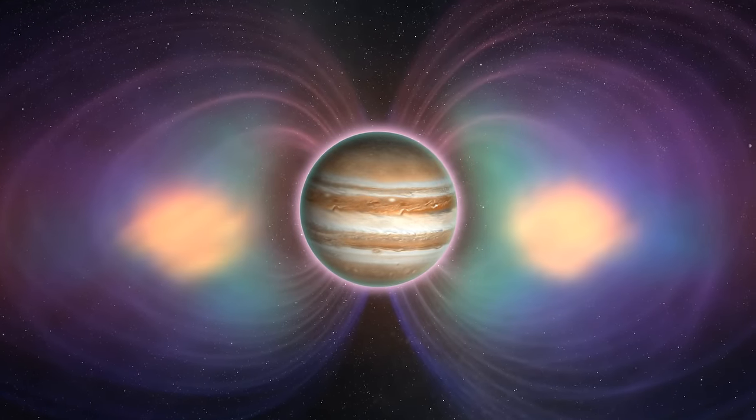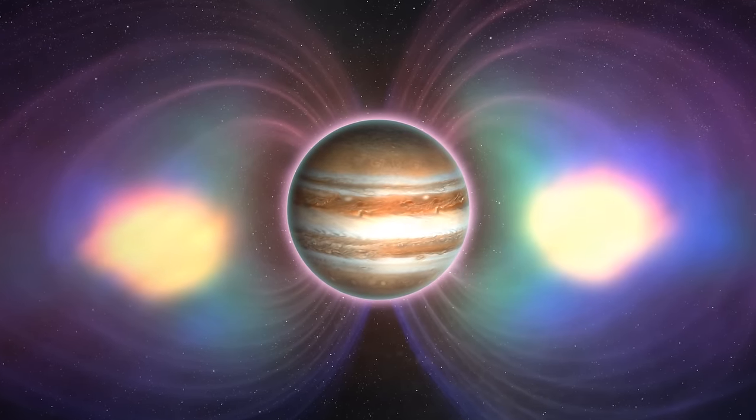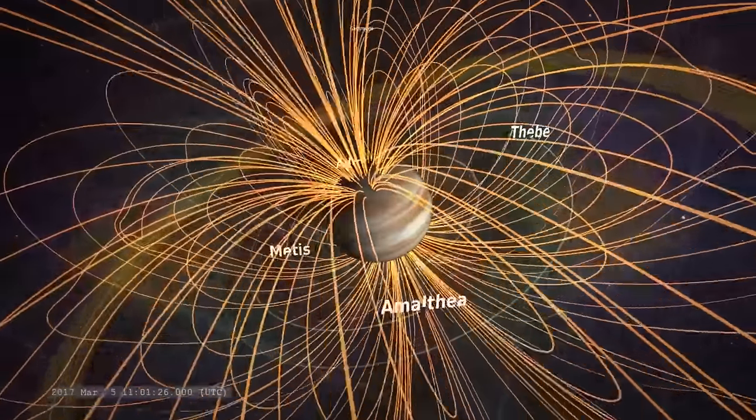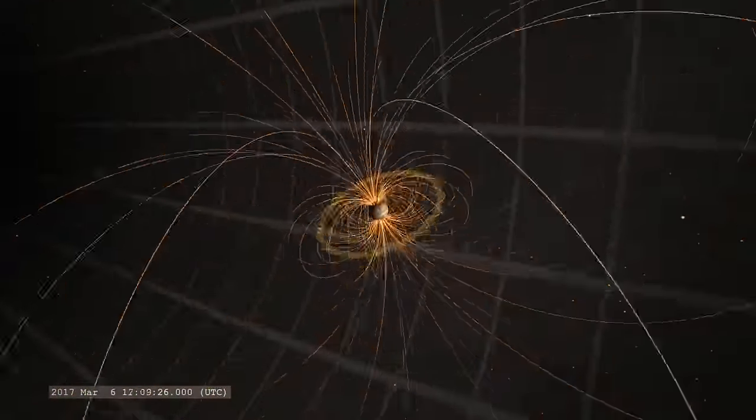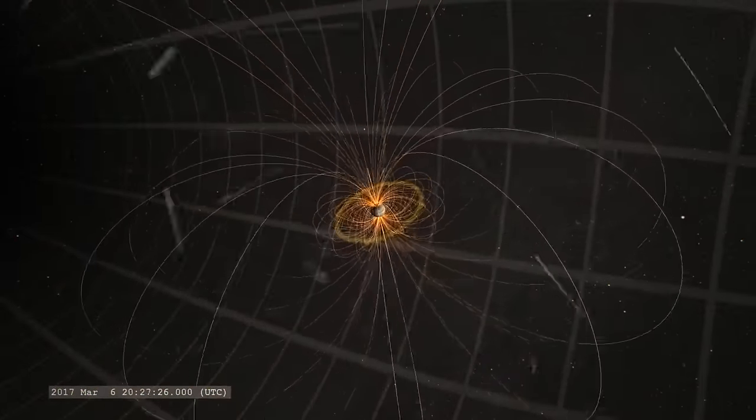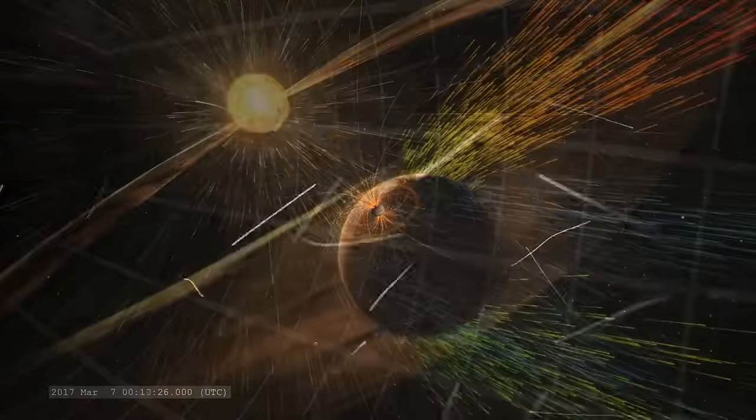Just like Earth, Jupiter has a magnetic field. It's like an invisible bubble that surrounds the planet, extending to space. This magnetic field is really important because it protects the planet and everything on it. It acts like a shield against harmful particles from space, like those coming from the sun.